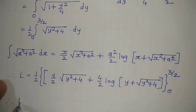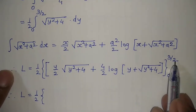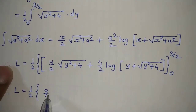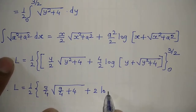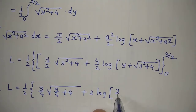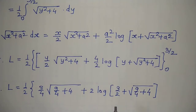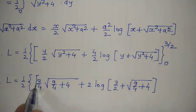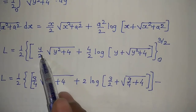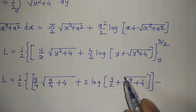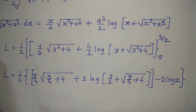Substituting the upper limit y = 3/2: the first term gives (3/4)·√(9/4 + 4) = (3/4)·√(25/4) = (3/4)·(5/2) = 15/8. The log term gives 2·log(3/2 + 5/2) = 2·log(4). For the lower limit y = 0: all terms are 0 except the log term, which gives 2·log(√4) = 2·log 2. So we subtract minus 2·log 2.